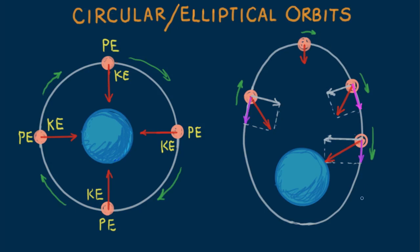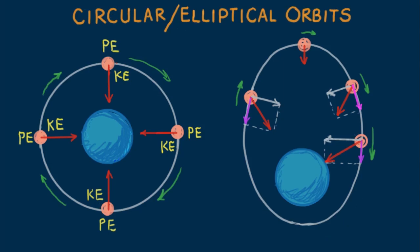So for our satellite, we see it has the least speed farthest from Earth and the most when closest. It falls around and around indefinitely.